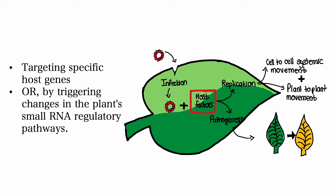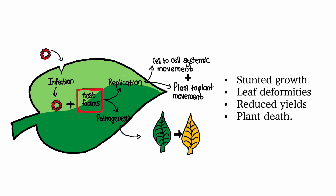These disruptions can lead to a range of symptoms including stunted growth, leaf deformities, reduced yields, and even plant death.